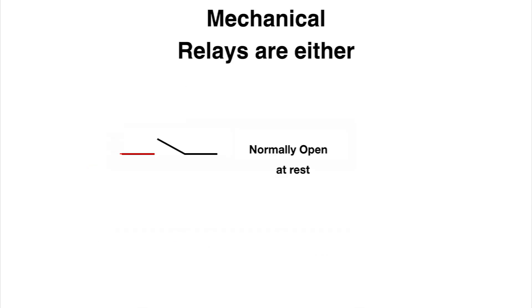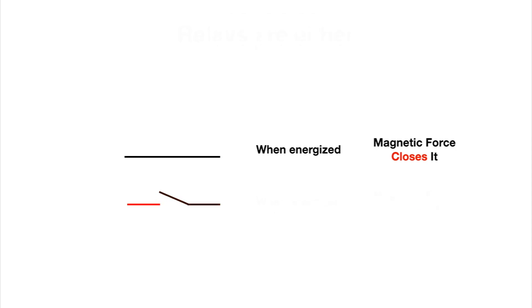Mechanical relays come in two forms. They are either normally open and when energized the magnetic force closes the contacts, or they are normally closed and when energized the magnetic force opens the contacts and stops current flow.